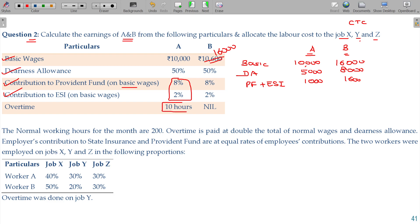A will get 10 hours. That will be separately calculated. B will say no overtime. Regular time. The normal working hours for the month are 200. Overtime is paid at double the total of normal wage and dearness allowance. Normal wage, that is basic, plus DA, 2x, that is 2 times, overtime is double the rate, usual amount.